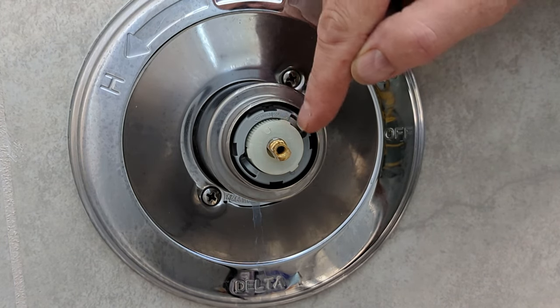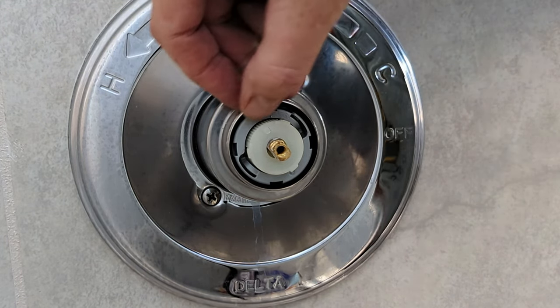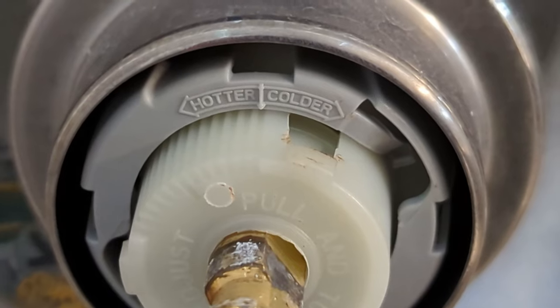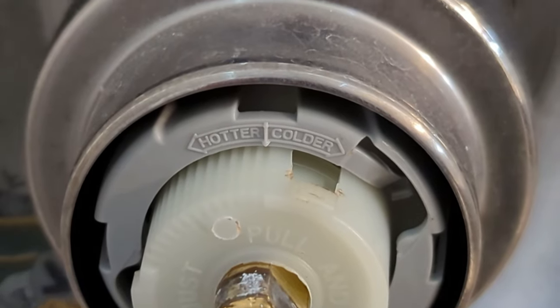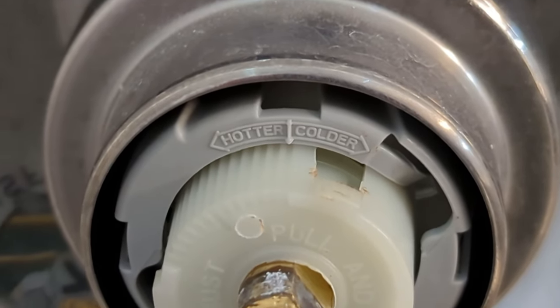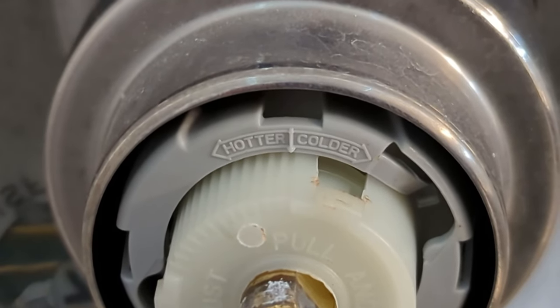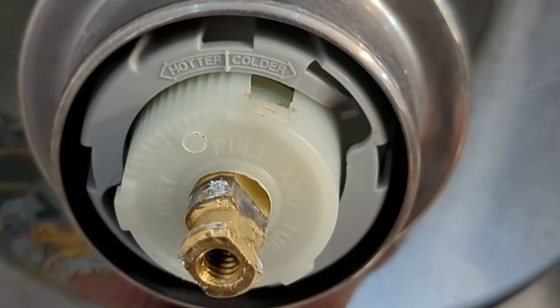Now we can see here, this has two parts to the mechanism, this gray part and then this white part. Now we can see on the mechanism, I'm sorry, I'm holding the camera here and I'm trying to zoom in. That's why it's a little shaky. But we can see it says hotter and colder.